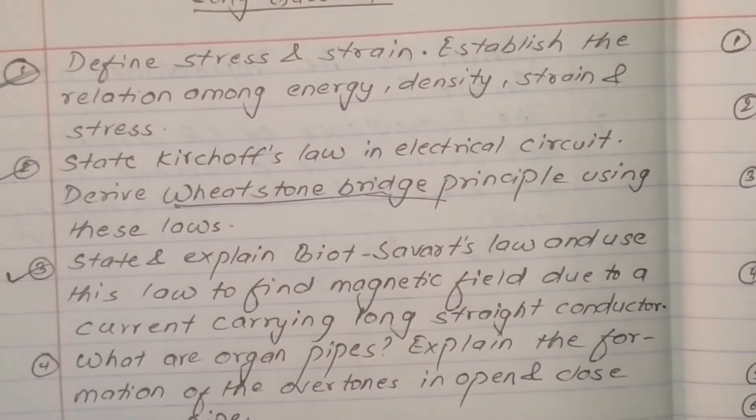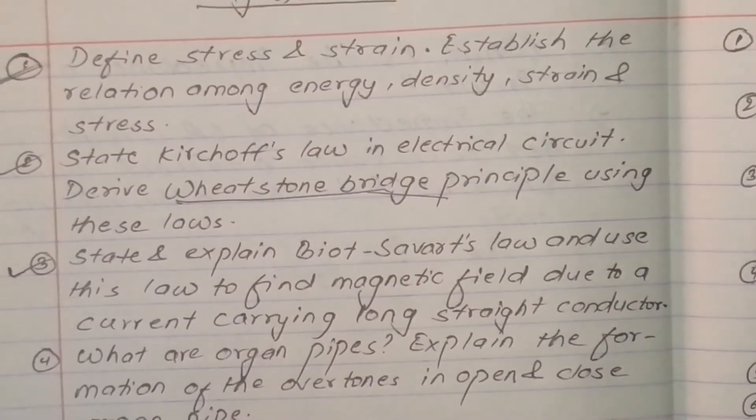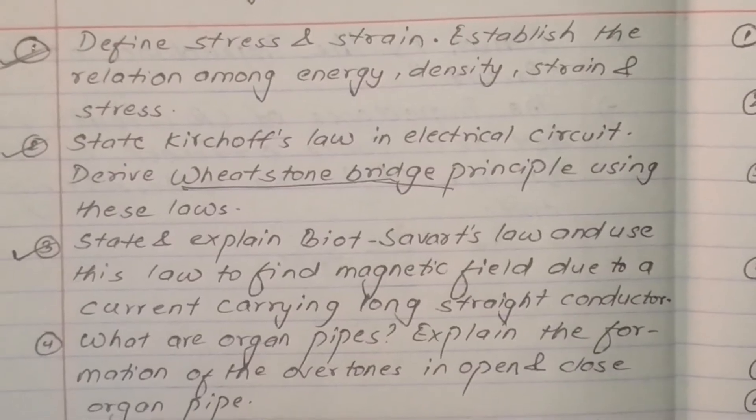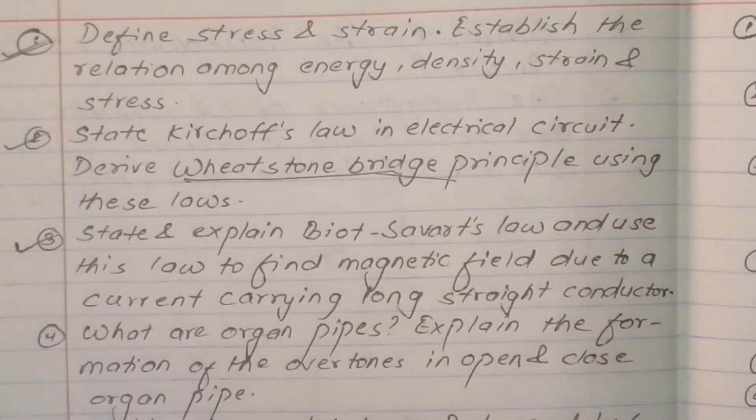In question number three, explain Biot-Savart law and use this law to find magnetic field due to current carrying long straight conductor.